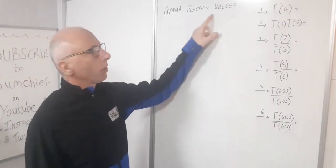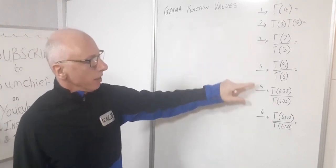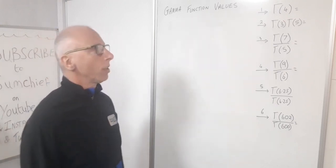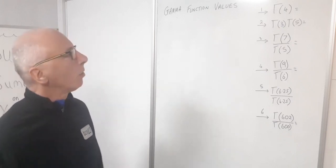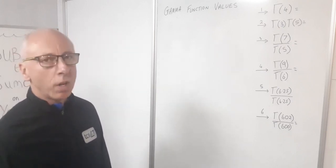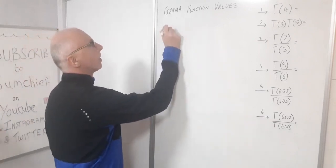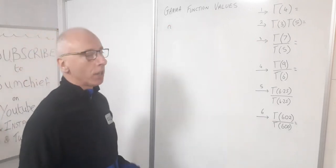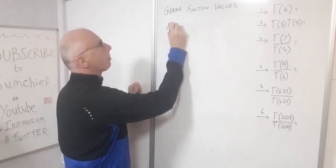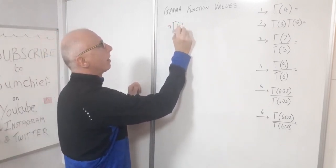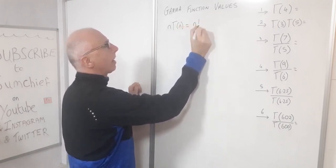In this video we're going to look at gamma function values and answer six questions using properties of the gamma function. First, let's look at what the gamma function is and its properties. We know that the gamma function is related to the factorial function, and n times gamma of n is the same as n factorial.